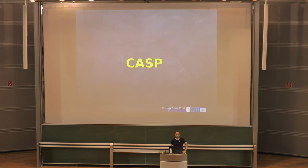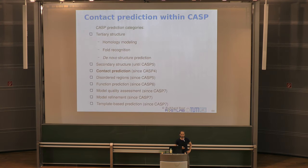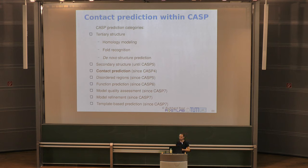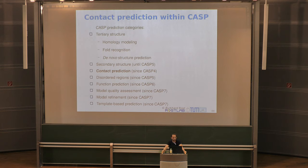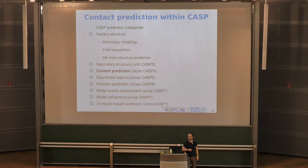Now let's talk about CASP. Think of CASP as the Olympics of structure prediction — many different sports categories that are related but partly independent. CASP has many categories: 3D structure prediction with subcategories like homology modeling, fold recognition, and de novo prediction. Secondary structure was there from the beginning but was cancelled after CASP 5. Contact prediction has been a category since CASP 4, and others like disordered regions and function prediction have been added since.